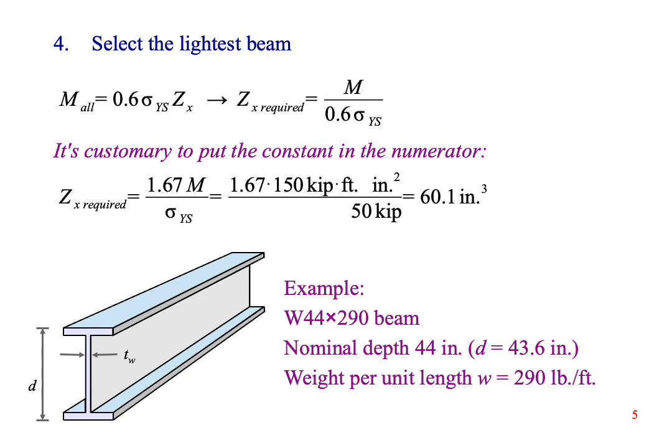Step four is to pick a beam. In order to do that, we need to work out the plastic section modulus that is required. Back in chapter nine, we learned that the maximum moment that a steel beam will support is equal to a safety factor times the yield strength of the steel and the plastic section modulus, Z. We can rewrite the formula to find out how much Z is needed to support the bending stresses in the beam. It's customary to put the constant in the numerator, so Z required is 1.67 times the maximum moment divided by the yield strength. Running the calculation, this beam needs a Z of at least 60.1 inches to the third power.